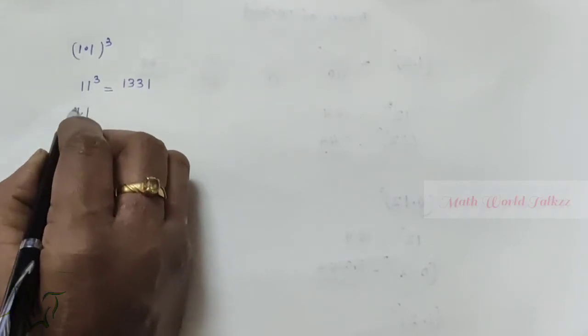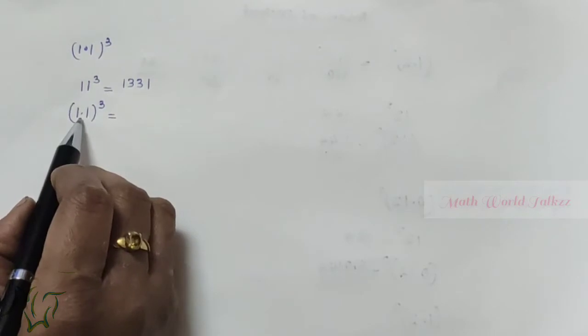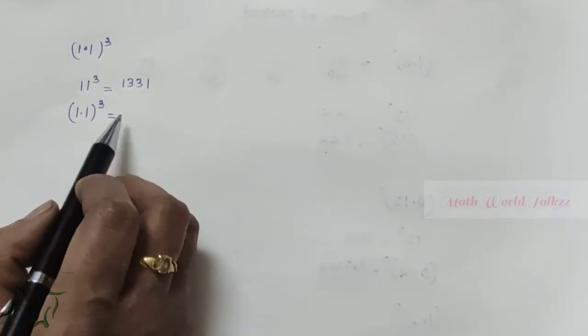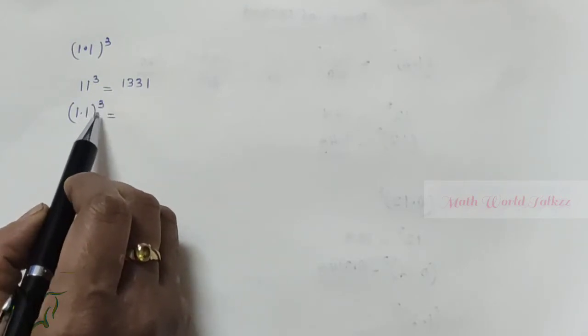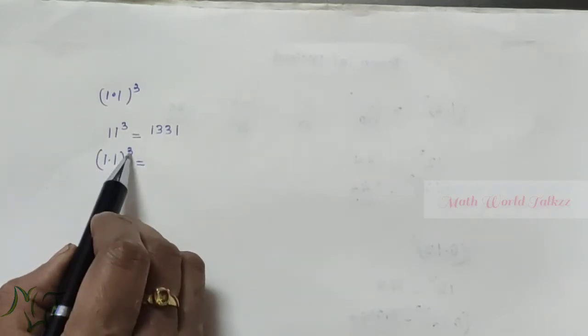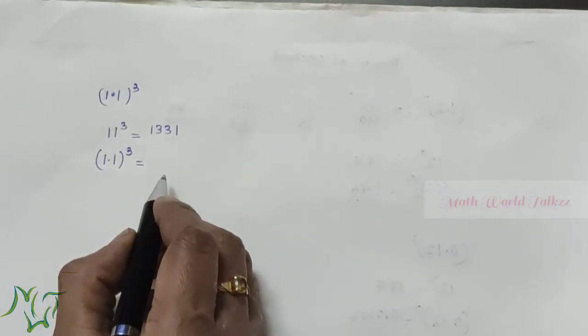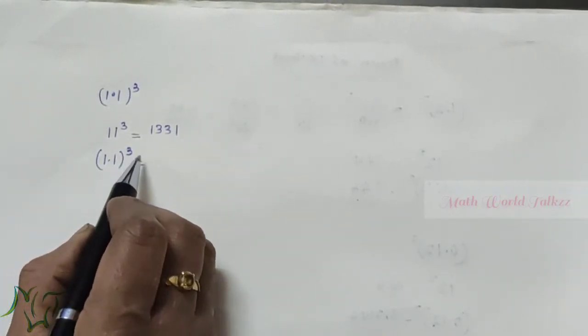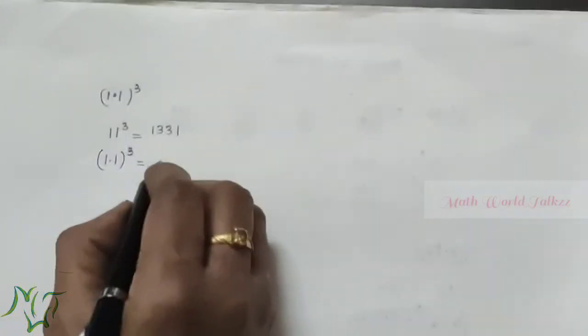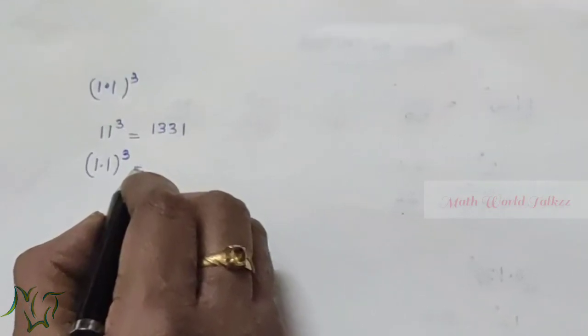1.1 whole cube. Here we can see one decimal place and the power is cube, so we need three decimal places in the answer. What is 11 cube? 11 cube is 1331. There should be three decimal places, so counting from the right: one, two, three — put the point here. The final answer is 1.331.